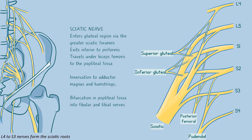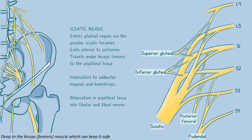L4 to S3 nerves form the sciatic roots, to the adductor magnus and the hamstrings too. From its foramen to the thigh it makes its way, deep to the biceps muscle which can keep it safe. The knee is destination — one final bifurcation — the common fibular and tibial nerve go on.